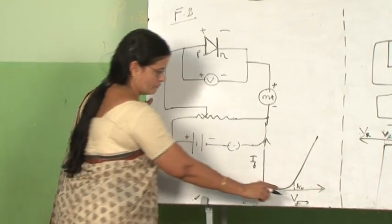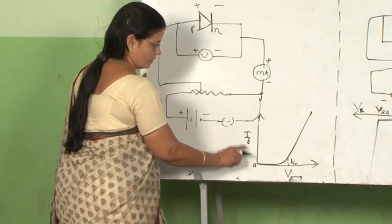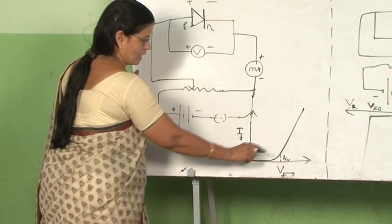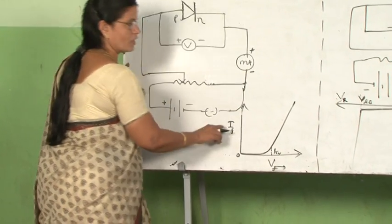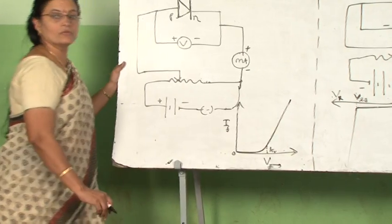So using the set of values of voltage and current, we can draw a graph. So this graph between forward voltage and forward current is called forward characteristics.